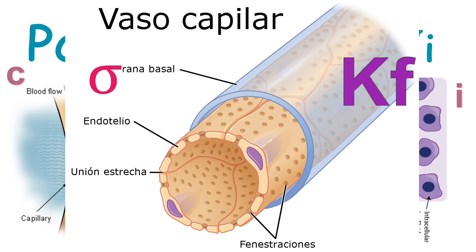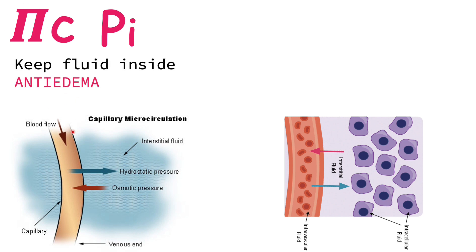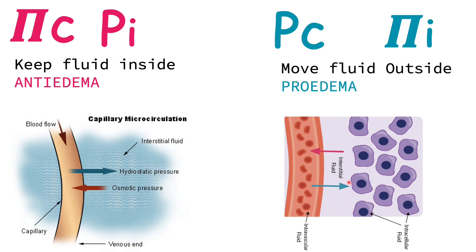Following the pink arrows, we gather the two anti-edema forces: the oncotic pressure of the capillary (πC) and the hydrostatic pressure of the interstitial fluid (PI) — both keep fluid inside. Following the blue arrows, the capillary hydrostatic pressure (PC) and the interstitial oncotic pressure (πI) push fluid outside — these are the pro-edema forces.